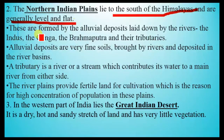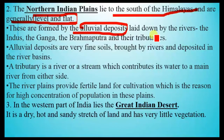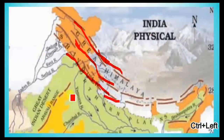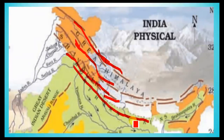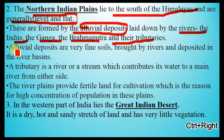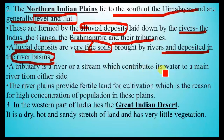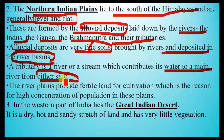The Northern Indian Plains lie to the south of the Himalayas and are generally level and flat. They are formed by the alluvial deposits laid down by the rivers — the Indus, the Ganga, the Brahmaputra, and their tributaries. Alluvial deposits are very fine soils brought by rivers and deposited in the river basin. A tributary is a river or stream that contributes its water to a main river from either side.